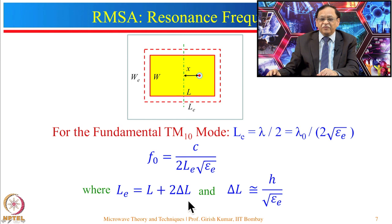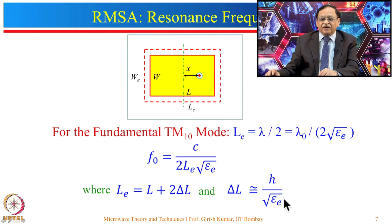L_e is given by L + 2ΔL, and the value of ΔL can be approximately calculated as h divided by sqrt(epsilon_e). I will show you the expression for epsilon_e later, but first let us look at the field characterization for TM10 mode.